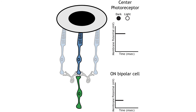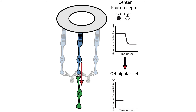Let's use an example of an on-bipolar cell to look at the structure of receptive fields in the retina. The bipolar and ganglion cell receptive fields are divided into two regions: the center and the surround. The center of the receptive field is a result of direct innervation between the photoreceptor and bipolar cells. If the center of the receptive field moves from dark to light, the on-bipolar cell would depolarize. The light hits the photoreceptor, it hyperpolarizes, decreasing glutamate release — less glutamate leads to less inhibition of the on-bipolar cell and it depolarizes.